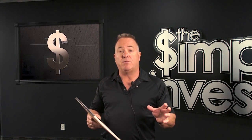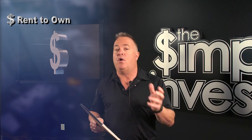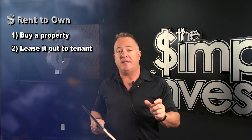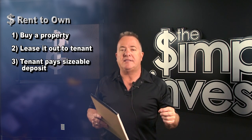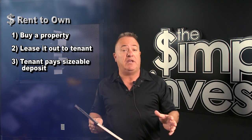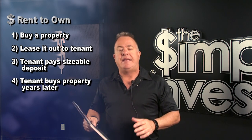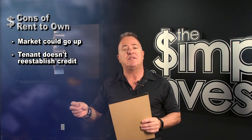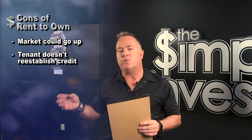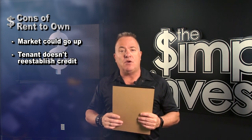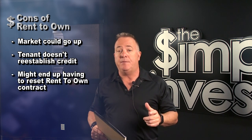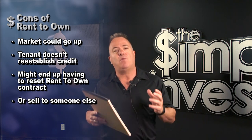Another avenue is the rent-to-own strategy. A lot of times people will buy a property, lease it out to a tenant, and the tenant gives them a sizable deposit to rent for the next two years with the idea that they'll be able to buy it. One of the problems with a rent-to-own scenario is that the market could go up more, or the tenant doesn't reestablish credit — one of the reasons why they couldn't get a mortgage in the first place. So you may end up two years from now in the same boat, either doing this again or having to disperse the asset because you didn't want to be a landlord.